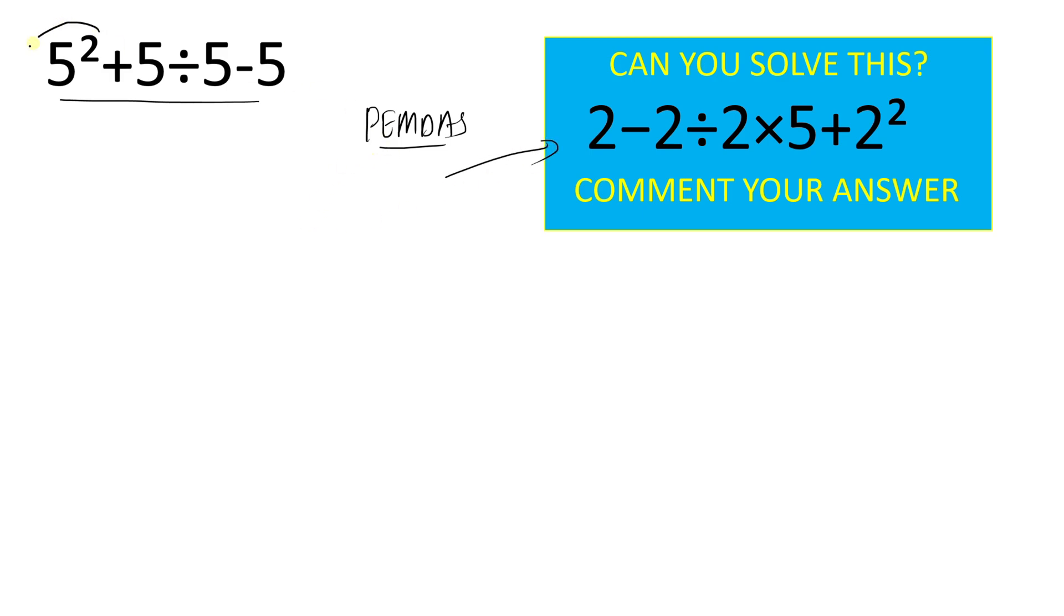Here as we can see, first we have to solve this exponent part because there is no parenthesis. So we will solve the exponent. Now here exponent part is 5 to the power of 2 which equals 5 times 5. And this will give us 25. So we can simply write 25 there.